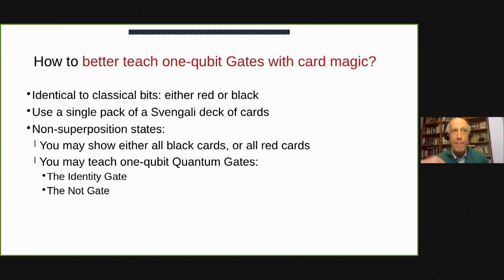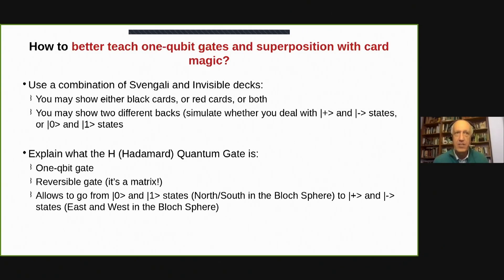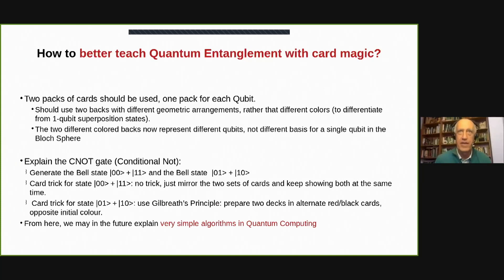So, we can also use Svengali and invisible decks, a combination, so we can have, we can reveal either black cards or red cards of both at the same time. And we can explain the Hadamard quantum gate that puts a qubit into superposition. It is a reversible gate.